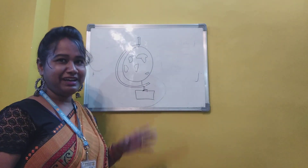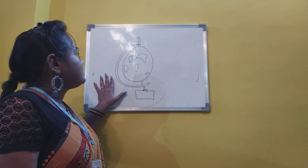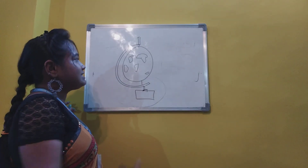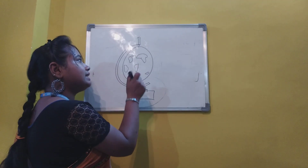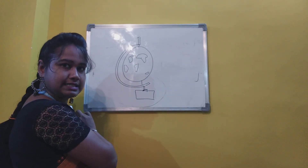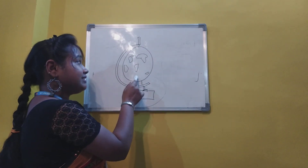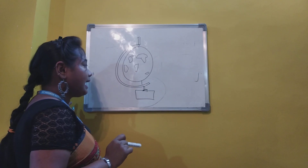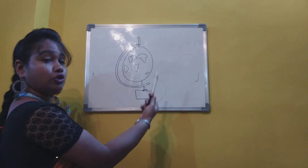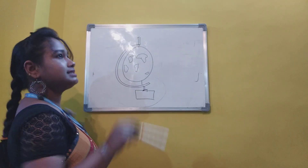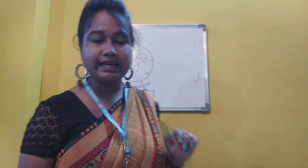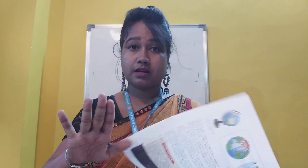This is a globe. We can see and understand the location of different continents, where the different oceans lie, and how the earth rotates. For understanding all these things, we need a globe. However, a globe has the following limitations — we can only use it up to a certain extent.